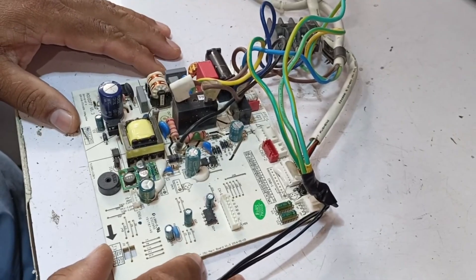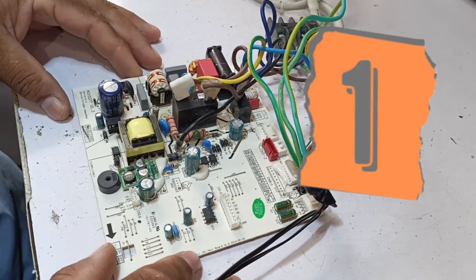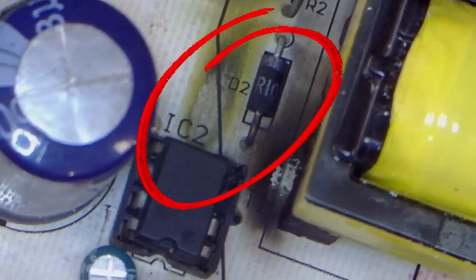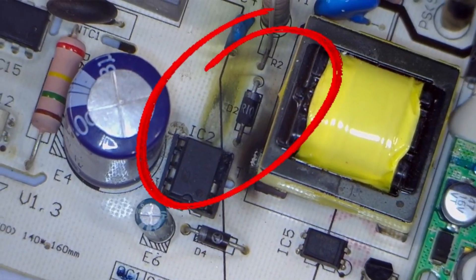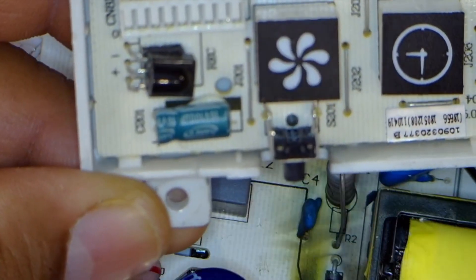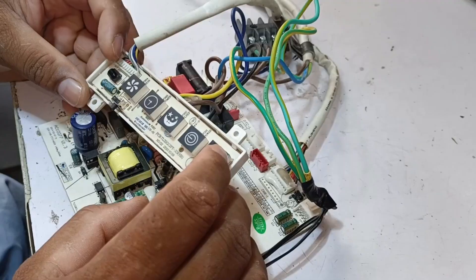In this indoor PCB, the customer mentioned two problems. The first issue is that this diode here has burned out, and due to this, the PCB isn't turning on at all. Additionally, the customer mentioned that when they try to turn on the display with the remote, it only turns on with great difficulty, meaning the remote is not working properly.